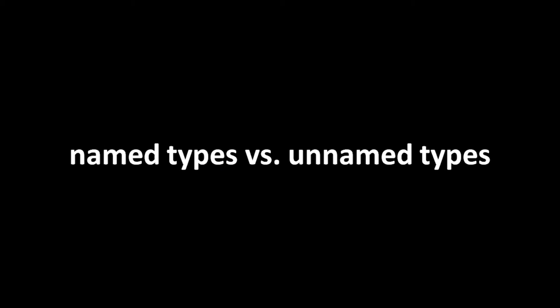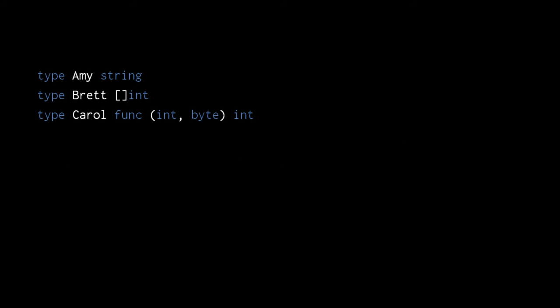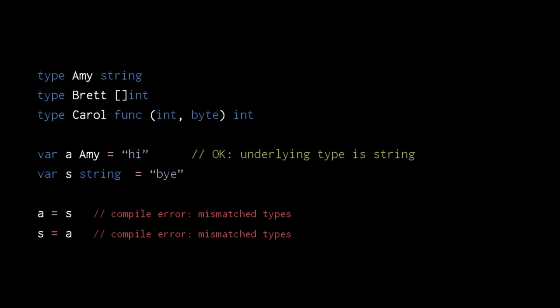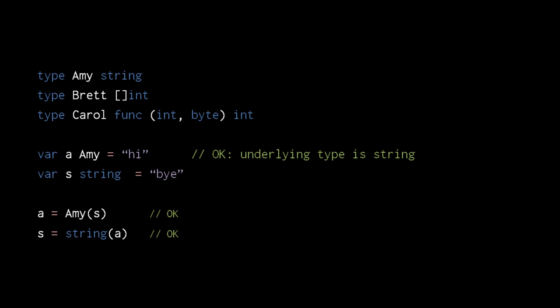A type statement can be used not just to create new structs, but also to define names for other existing types. Here we create a type amy, which is simply a string, a type bret, which is a slice of ints, and a type carol, which is a function taking int and byte parameters and returning an int. Types created with type statements are called named types, in contrast to the unnamed types like ints, string, pointers, arrays, etc. We can initialize variables of named types with appropriate literals, as we do here assigning amy a string "high", because an amy value is really just a string. Understand though that the compiler considers named types to be distinct from their underlying types — an amy value is not a kind of string, or vice versa. However, because the underlying types are the same, we can explicitly convert between these two.